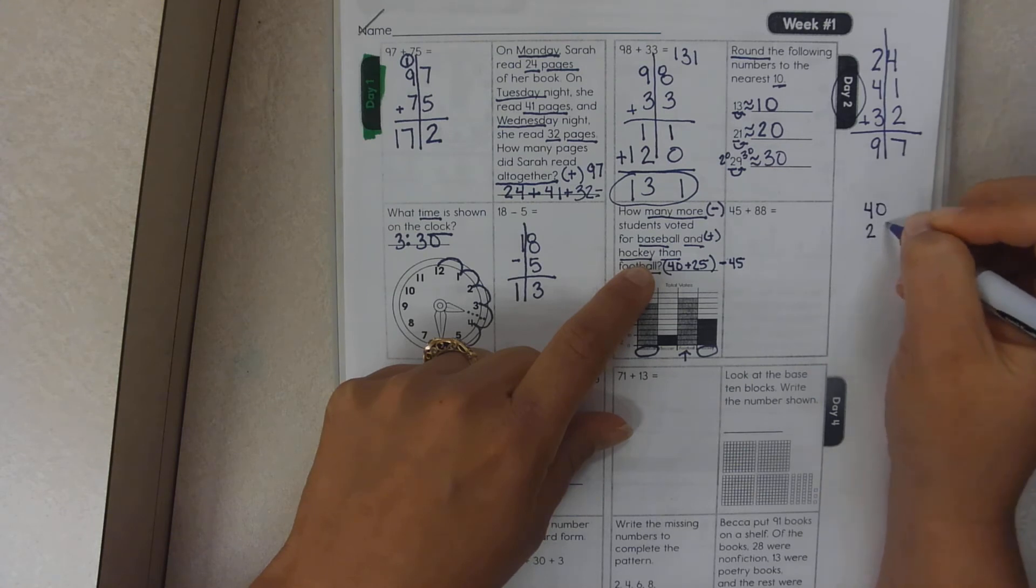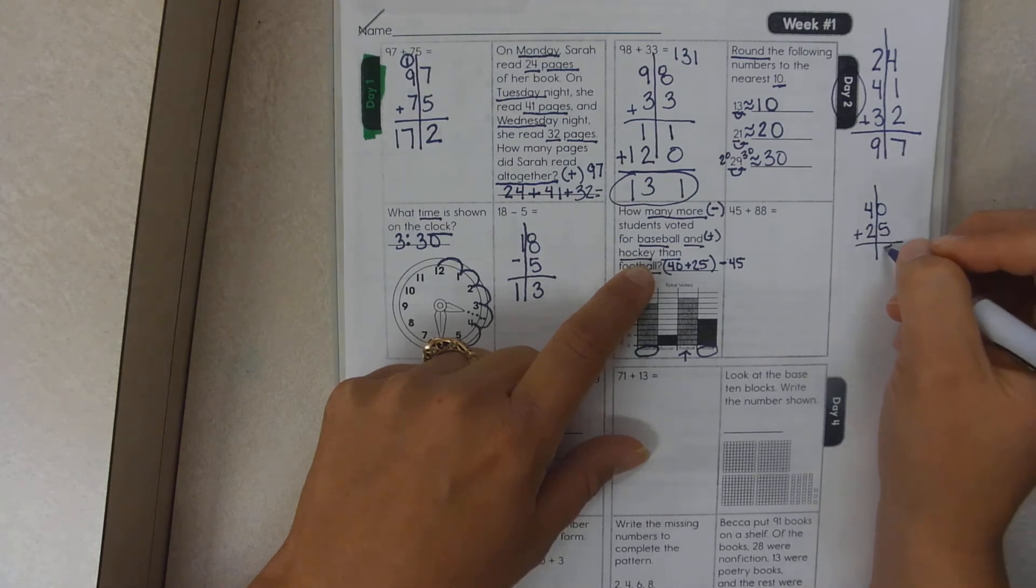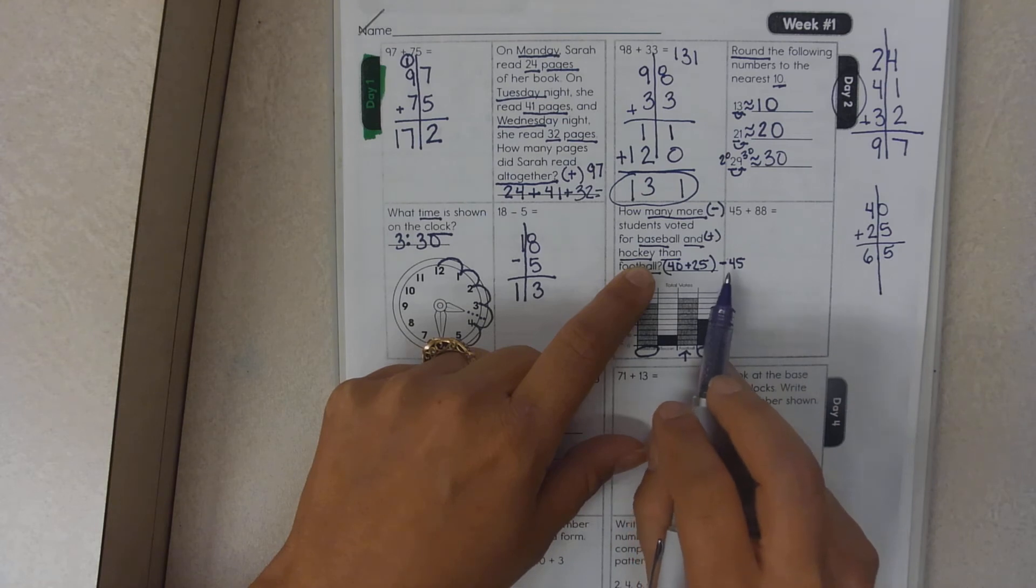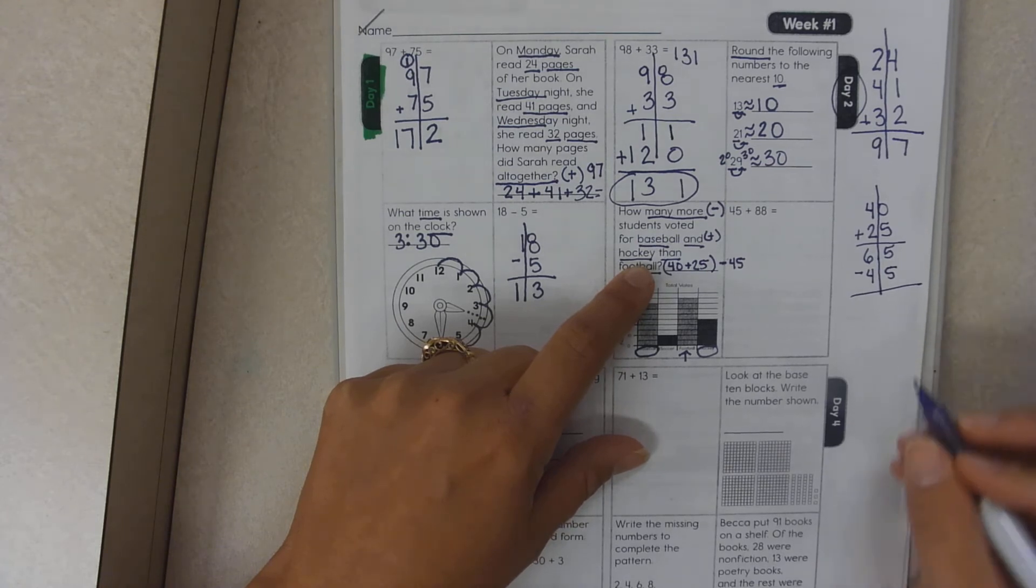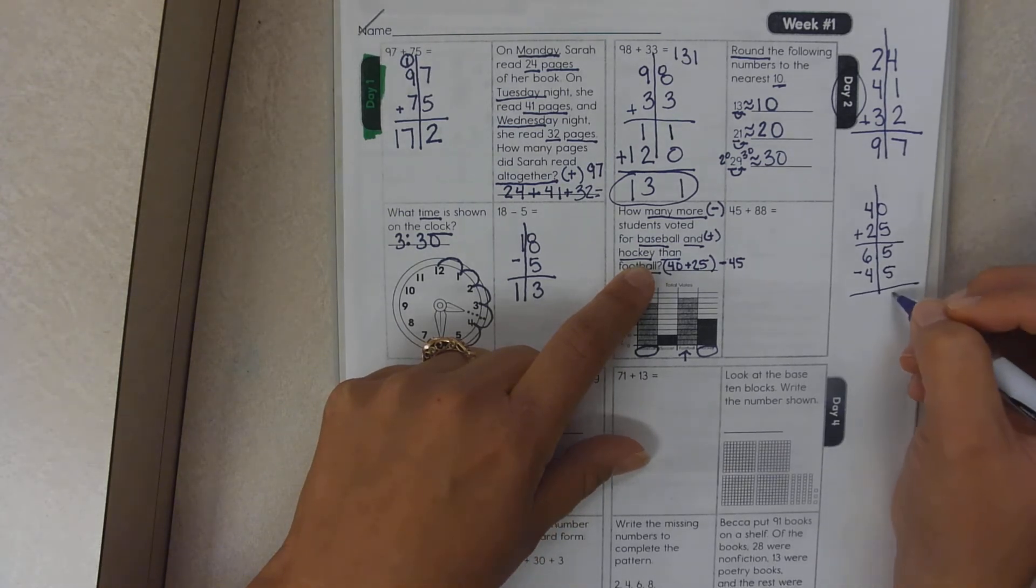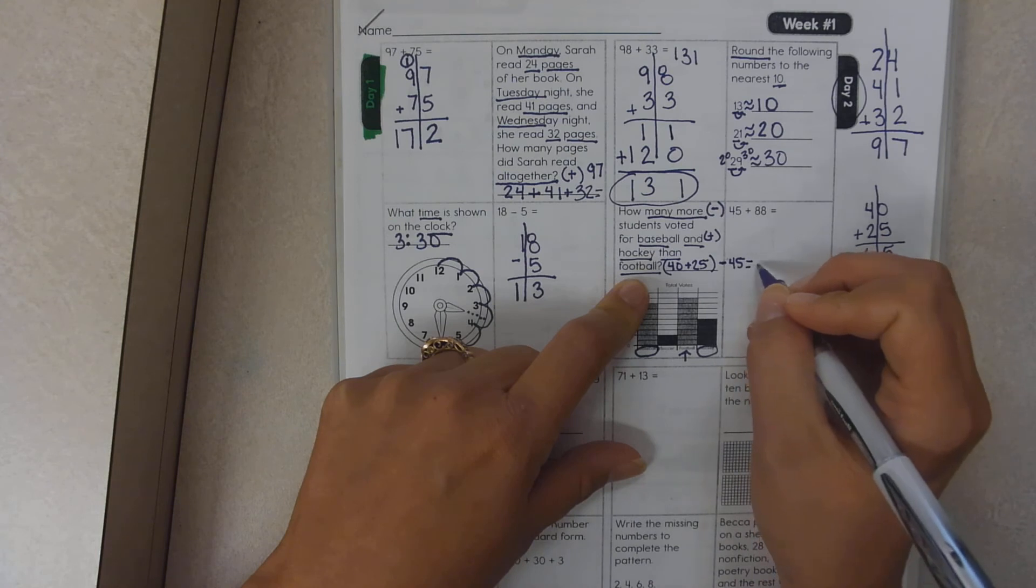Now, I need to do my subtraction problem. 5 minus 5 is 0. 6 minus 2 or 4 is 2. So my answer is 20.